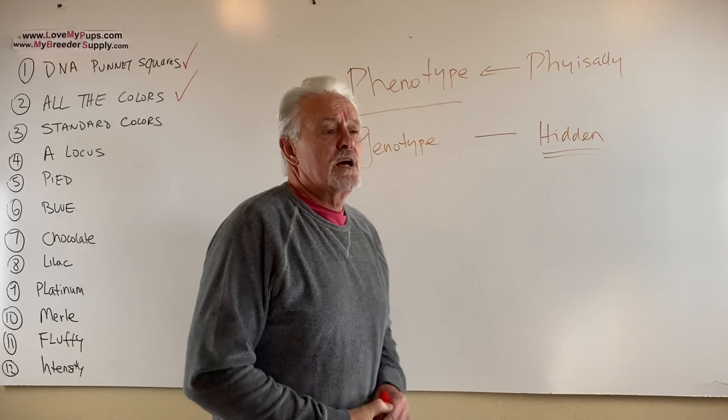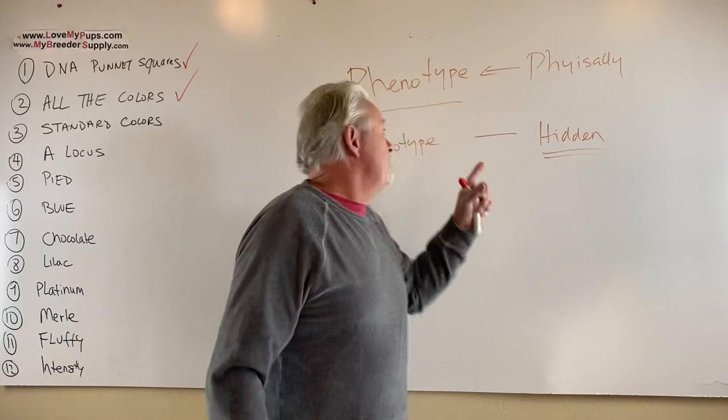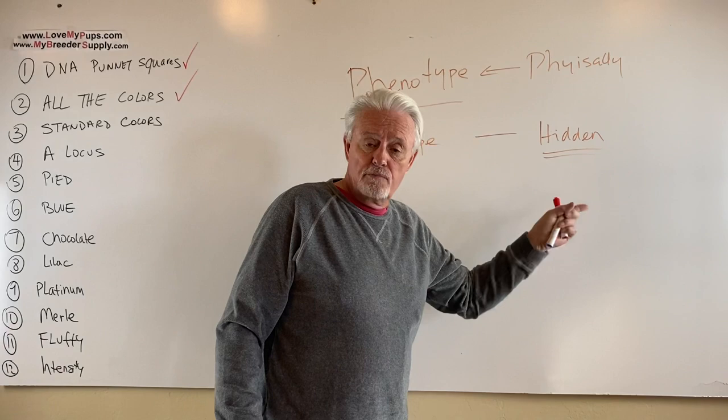An example would be: you could have a brindle dog that also had a single copy of blue. Its phenotype would be brindle, but its genotype is a brindle that carries blue. You don't see the blue — it's not expressed, but it is physically there.